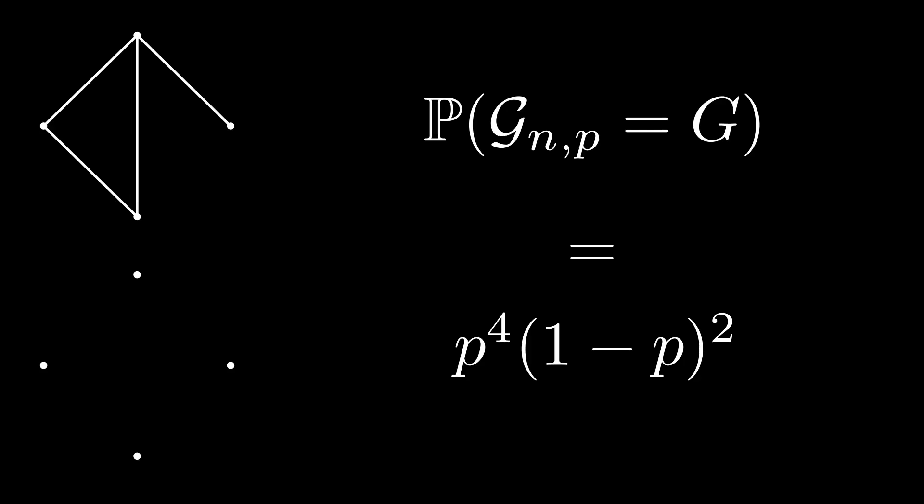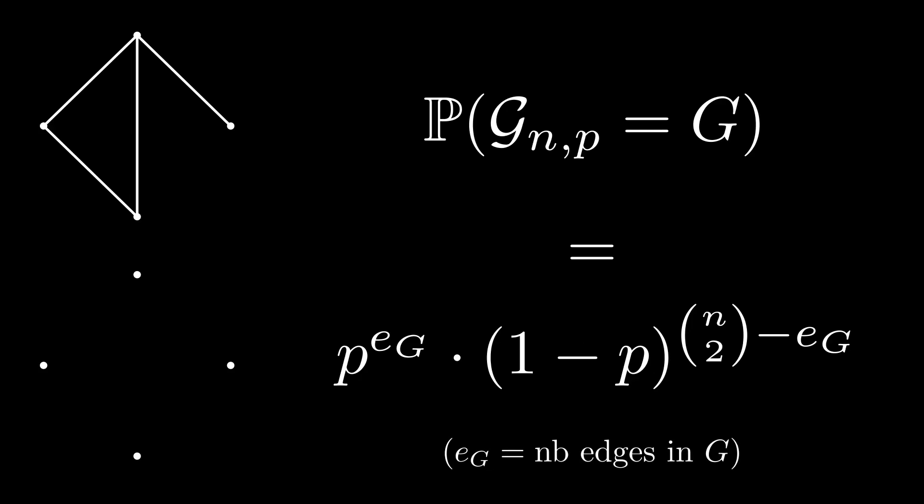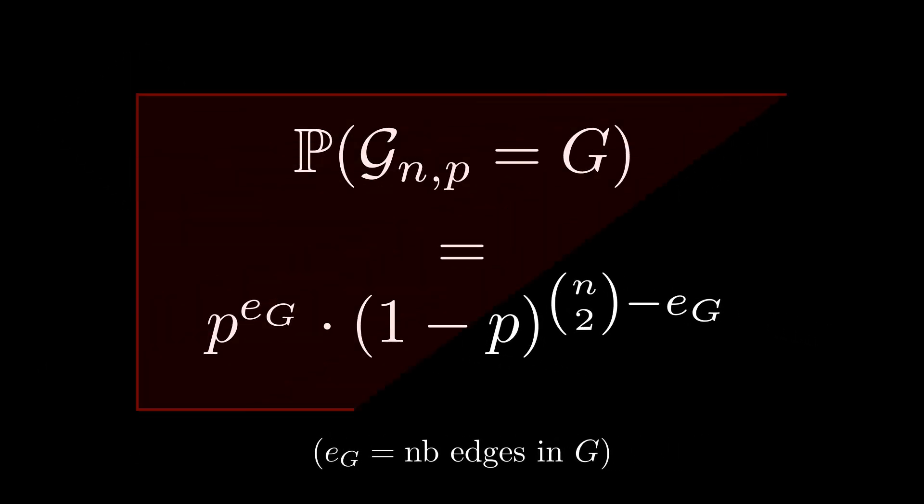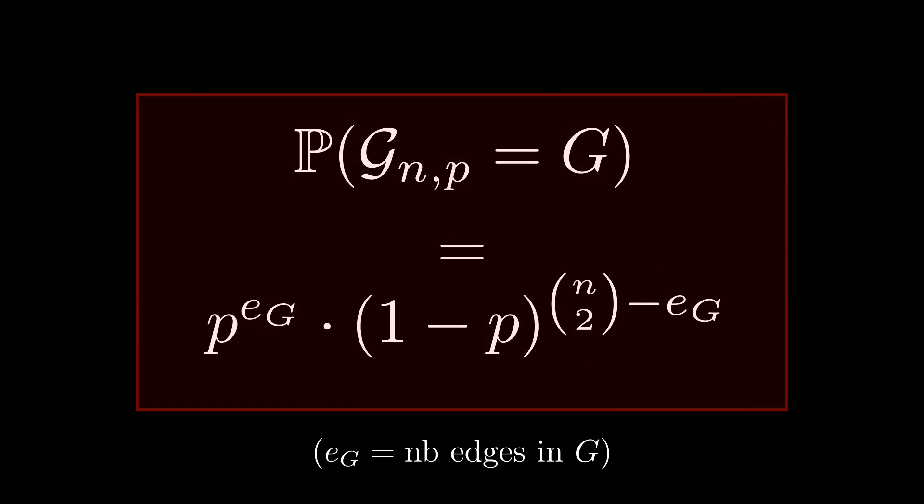Now, of course, doing that same thing for general g, we see that p appears to the power e_g, which is the number of edges in g, and the power above 1 minus p ends up being the number of pairs of points in g which are not linked by an edge. That is, n choose 2 minus e_g. We therefore get the following general formula for the probability of a graph being drawn. Note that, of course, it depends on the parameter p, and on the graph g.